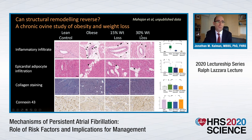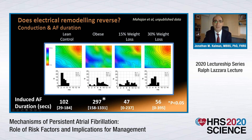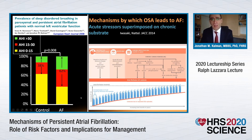Does this reverse? To understand this, we look at animal studies — unpublished work from the group of Prash Sanders using an obese sheep model. Overfed sheep become markedly obese and develop inflammation, adiposide infiltration, increasing fibrosis, and reduction in connexin. With 30% weight loss, almost all of this is reversible: inflammation disappears, adiposide infiltration reduces, collagen reduces, and connexin 43 levels improve. Epicardial mapping demonstrates that slowed conduction and increased conduction heterogeneity in obese sheep fully reverses with 30% weight loss back to baseline, and induced AF duration returns to baseline levels.